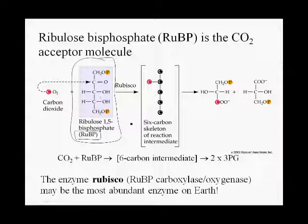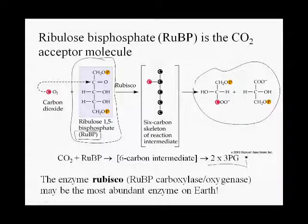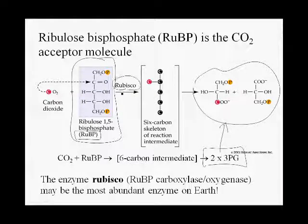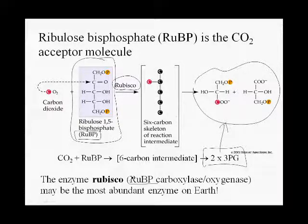This 5-carbon compound combines with a carbon dioxide and forms a very transient, highly unstable 6-carbon intermediate, which immediately breaks down to form two molecules of 3-phosphoglycerate. The enzyme that does this is called rubisco, which is short for RuBP carboxylase oxygenase. We will just affectionately call it rubisco.